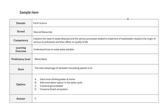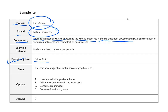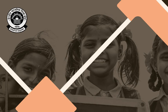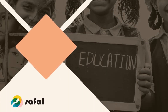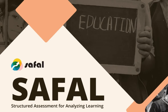Here you can see a sample item. The given domain is earth science, topic is natural resources, and the competency is to explain the need of waste disposal and the various processes related to treatment of waste water; proficiency level is below basic. A question is shown with four options. We have discussed all the important topics, questions and competencies for the assessment of science in the Safal Key Stage Assessment. Hope you will get Safalta in your Safal exam. That's all from this video. Thank you very much.